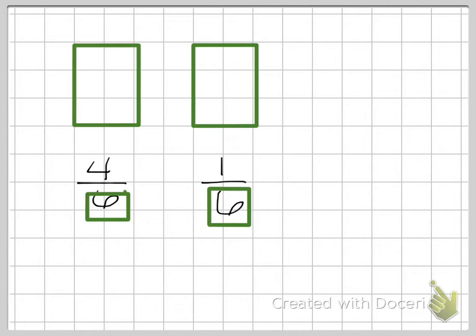Now what I'm going to do is shade in 4 boxes on my first visual because I have 4 sixths, or 4 of my 6 boxes, shaded.